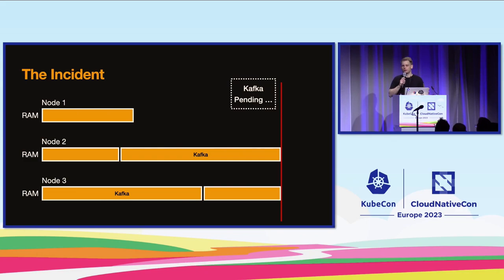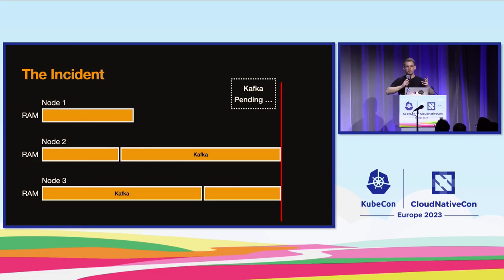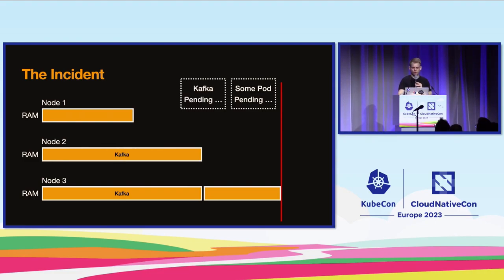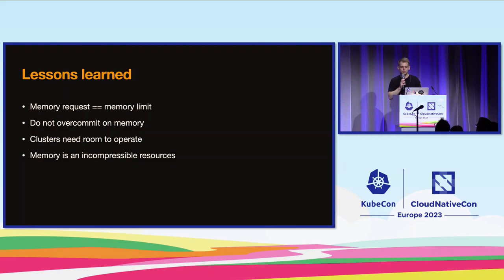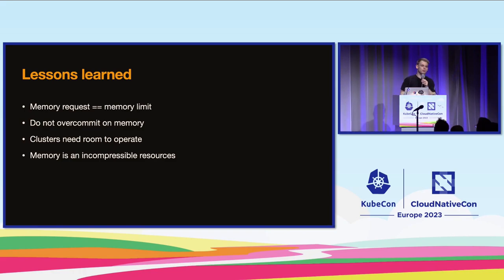With Kafka pods constantly crashing, being rescheduled, and being terminated again, the applications using Kafka ran into more and more problems. Not all of them had good failure handling, so some crashed and entered CrashLoopBackOff. We were in a vicious cycle: pods being rescheduled, pods being terminated, pods needing more memory than usual because of the already high utilization. We learned two things: over-committing on memory isn't always a great idea, and it's generally best to set memory requests equal to memory limits. Clusters also need room to operate — 90-something percent utilization is not a great idea since memory is an incompressible resource.